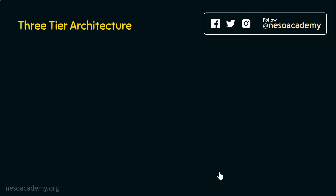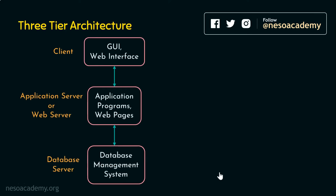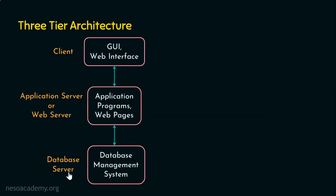As the name says, there are three levels, three tiers. The first level is the client level. The second level is the application level or the web server level. And the third level is the database server level.